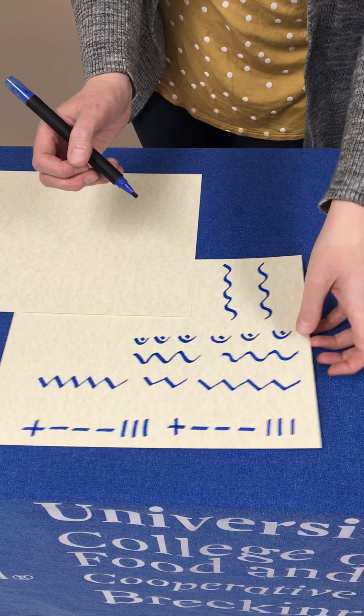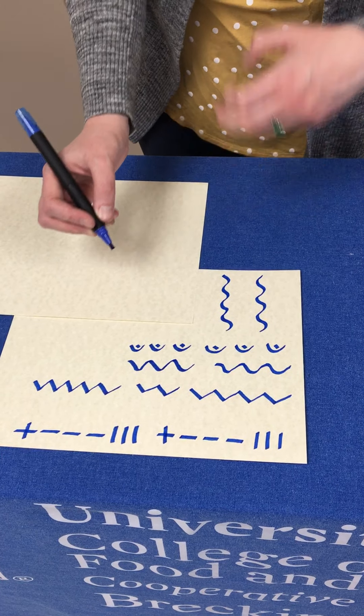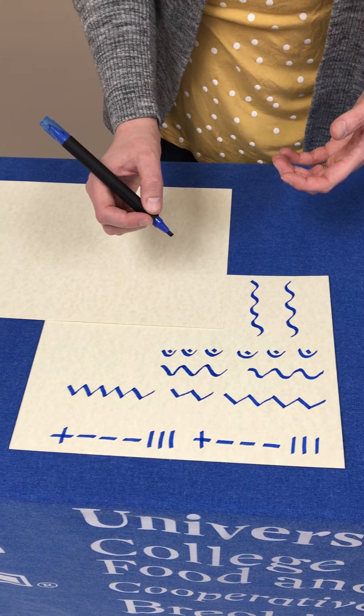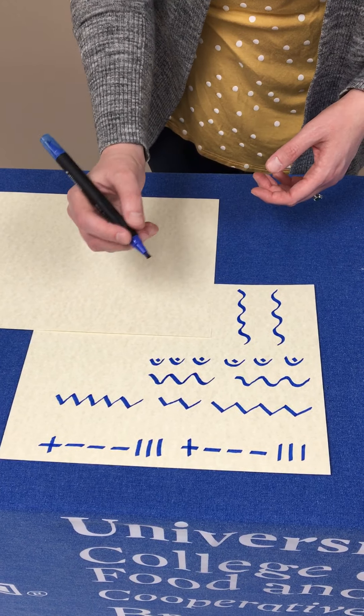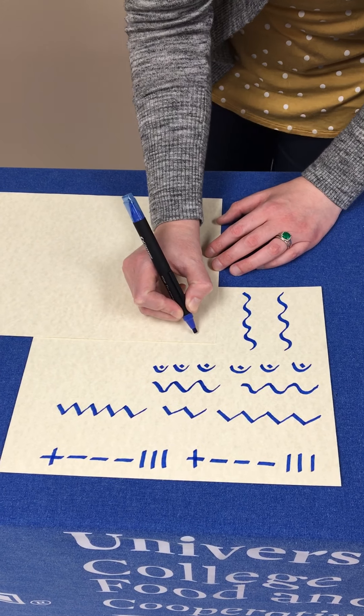We're going to practice some different shapes, as you can see on the paper here, just to get comfortable with our pen. The idea is, as you're writing in calligraphy, you don't want to have to be moving your pen all around. You want to keep it at a nice angle and a comfortable position in your hand.